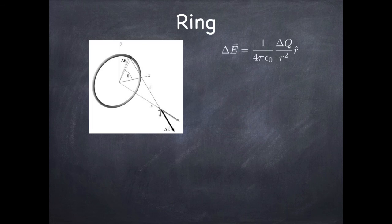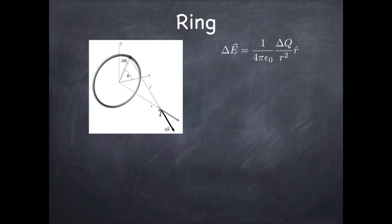Now the first thing I want to point out is that delta-E is a vector. It does not point along the axis, but there's an interesting symmetry of the ring. If I take the charge directly opposite and calculate its field, everything's the same except the x and y components will be exactly opposite, so when you add those two chunks' fields together the x and y components cancel and the z component survives. Since every chunk on the ring has an opposing chunk on the opposite side, when you add all the chunks together the x and y components cancel out and the z component does not.